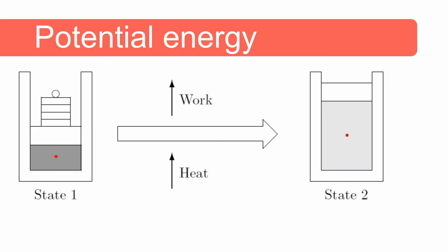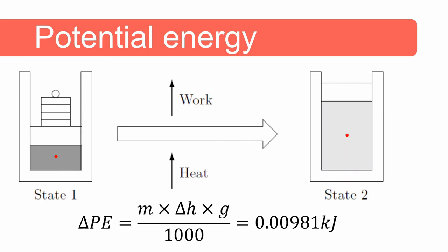If this process takes place in a gravitational field, the potential energy of the control mass would have increased. Considering the previous problem and assuming the center of gravity was raised by one meter, the change in potential energy is 0.00981 kilojoules. This value is much smaller than the work done of 5.79 kilojoules and the change in internal energy of 14.7 kilojoules. In closed systems the change in potential energy is therefore usually negligible and not taken into consideration.